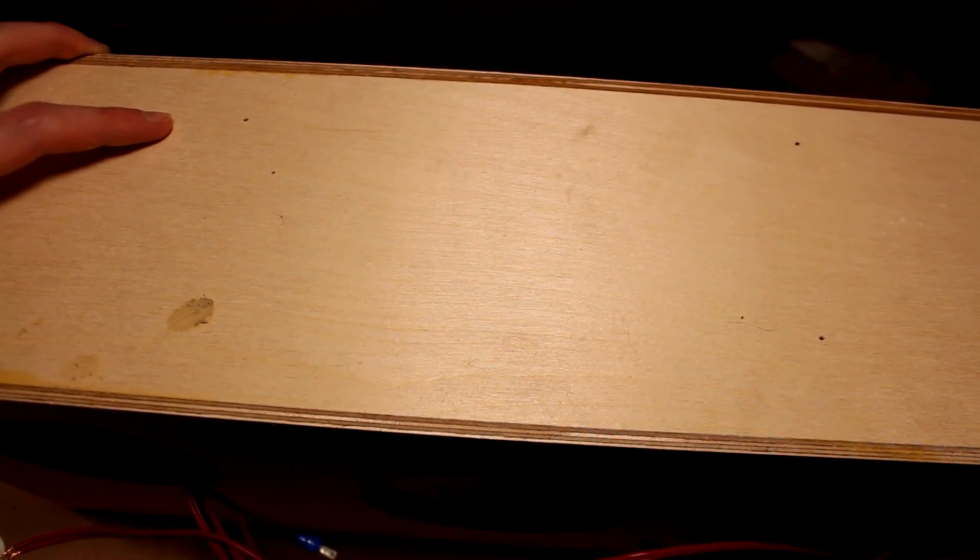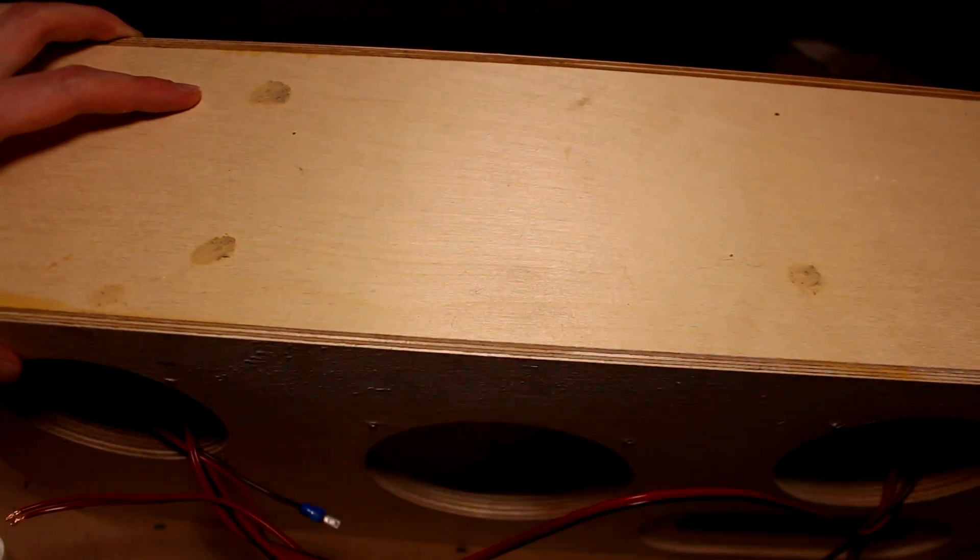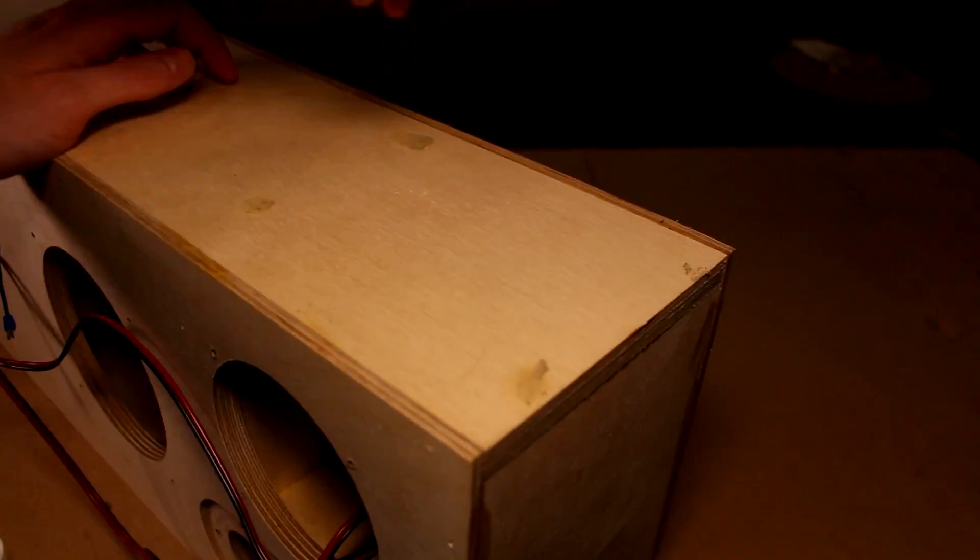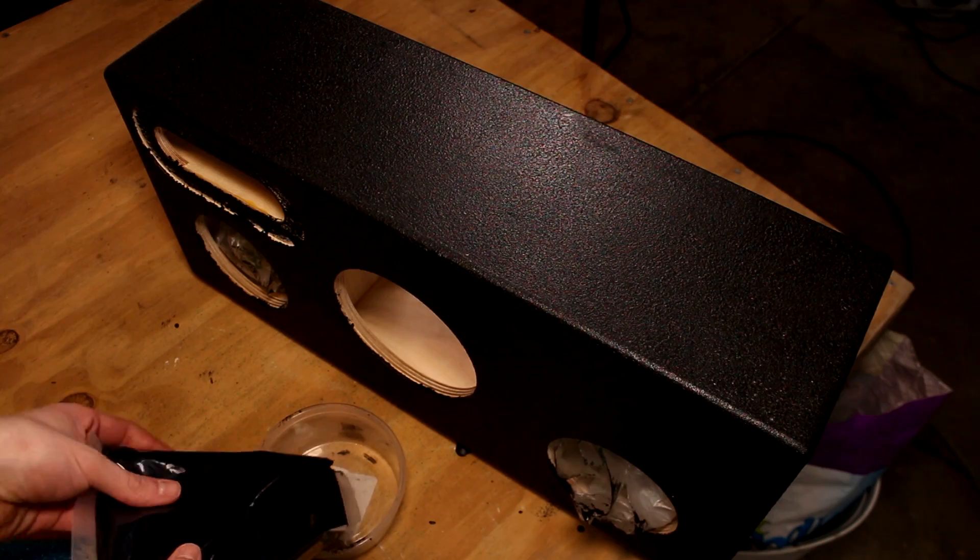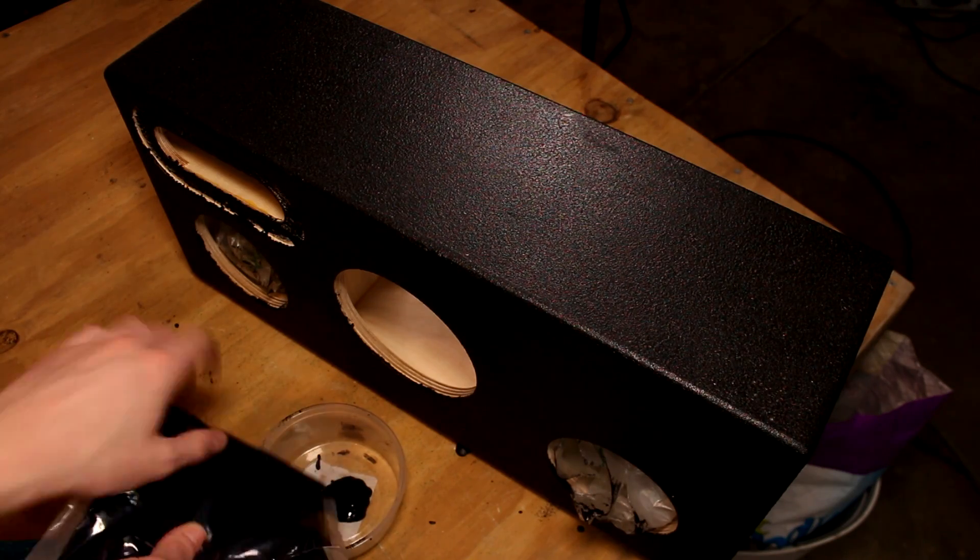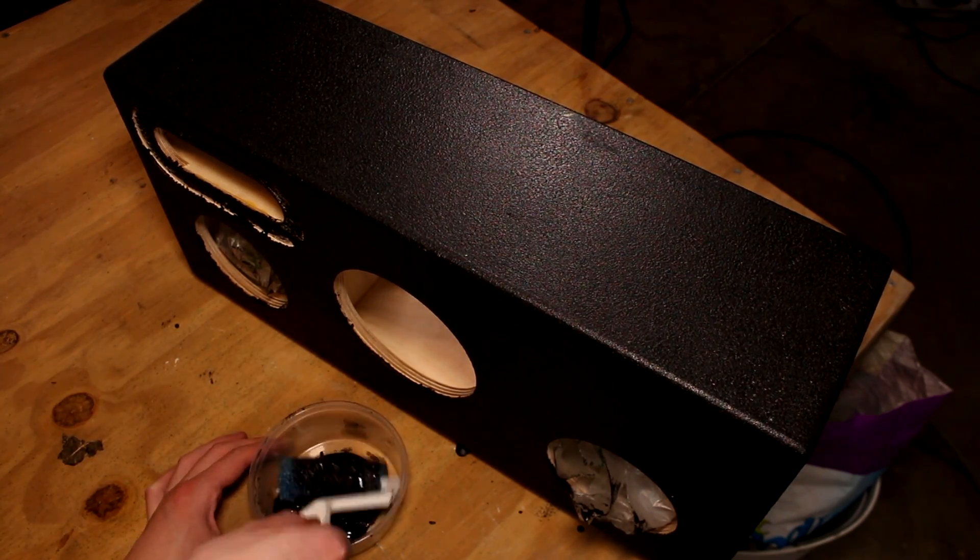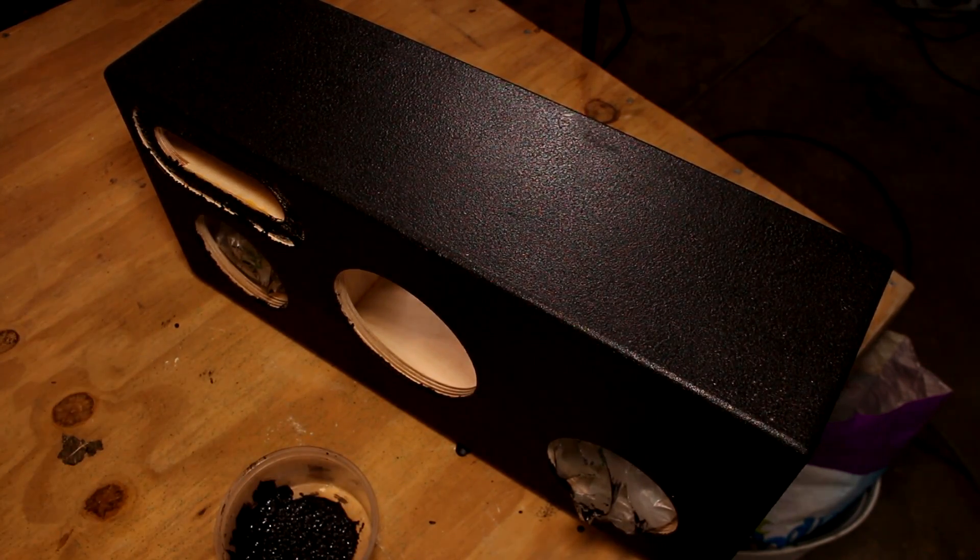Okay, so here I skipped a bunch of steps. I threw the box on a router table with a quarter-inch roundover bit and rounded over every single corner all the way around. Then I used the wood filler and filled in the end grain to make sure the coating didn't seep into the end grain and show seams.